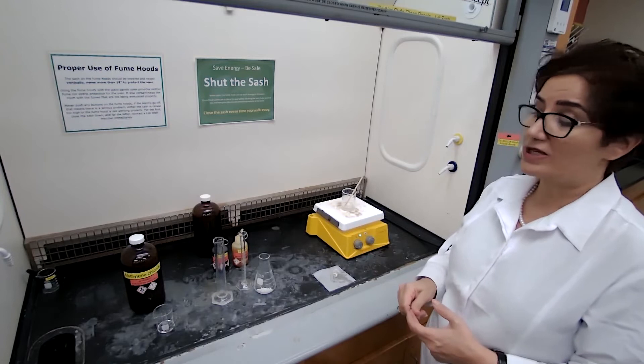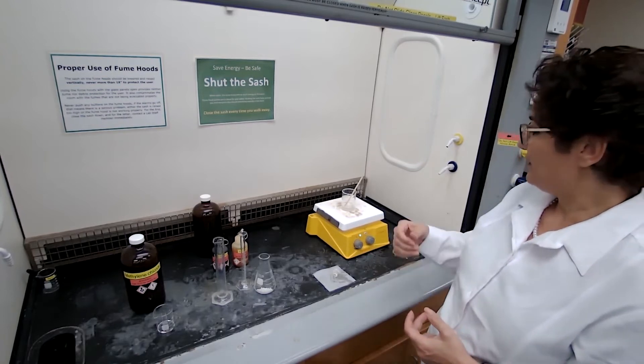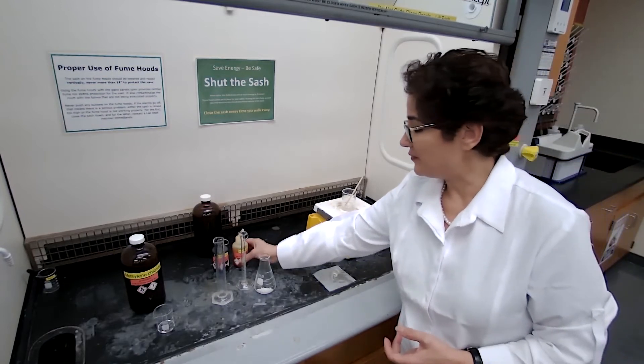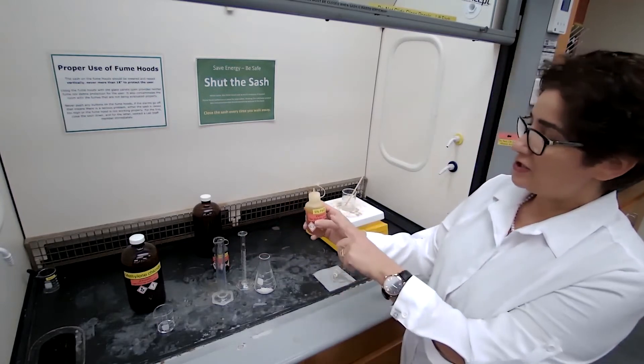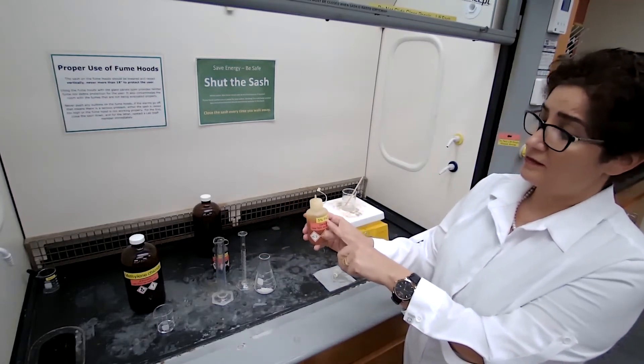For tests for unsaturation. For the phenol, testing for the phenol functional group, we're going to use the ferric chloride.